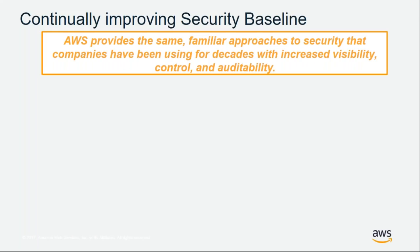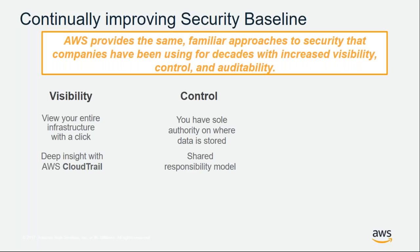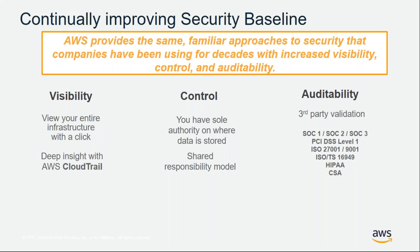We're also continuously improving our security. AWS provides familiar approaches to security with increasing visibility, control, and auditability. Visibility means we give you the ability to look into your infrastructure transparently — a level of transparency extremely difficult to achieve on-premise. Services like AWS CloudTrail and CloudWatch allow deep insights into your infrastructure. You also control where your data resides. When you create a virtual machine or store any data on AWS, you must specify where it resides, and only you can move the data — AWS will never change the geographical location of your data.